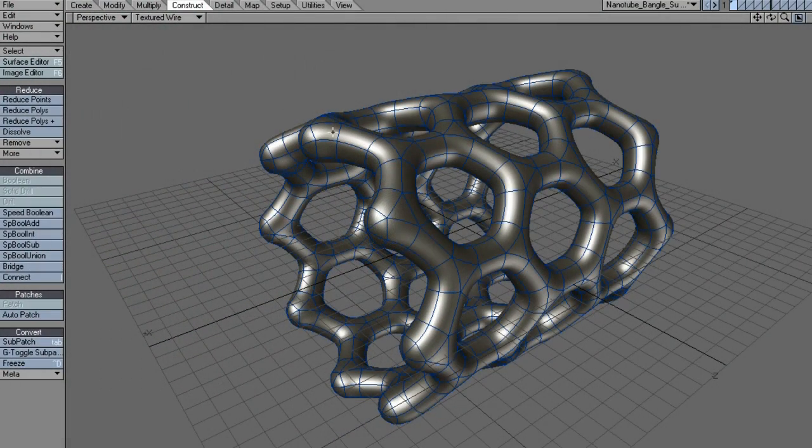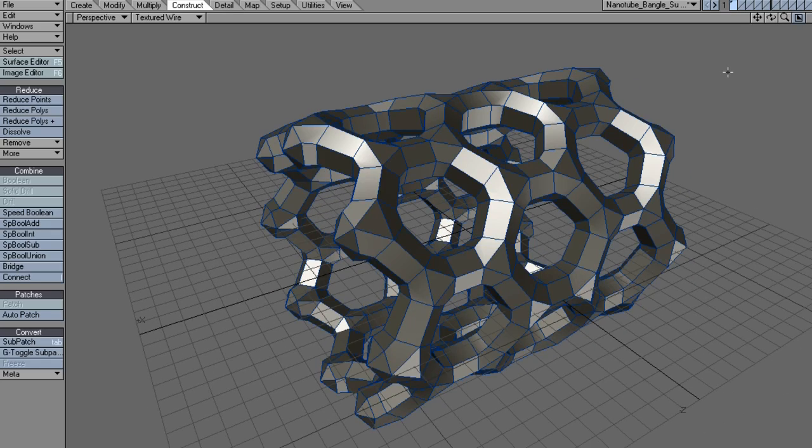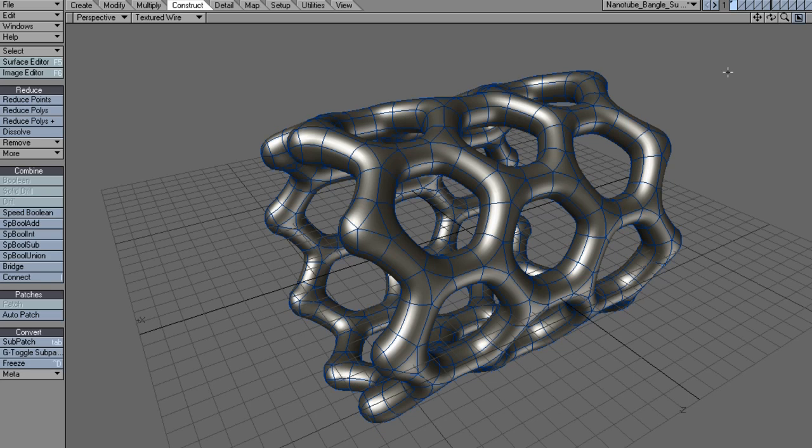It's built using a process called sub-patching which basically means whilst you see here a nice smooth model, it's actually built up from relatively few polygons that form the control cage which I can then flick on and it creates a smooth structure.